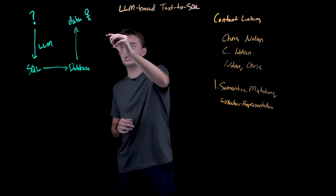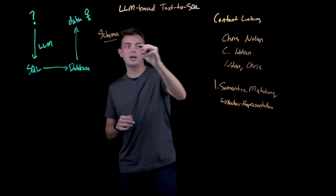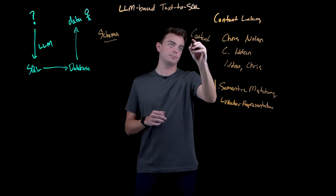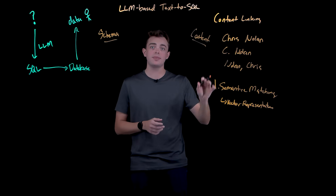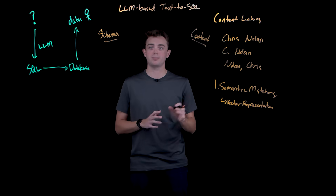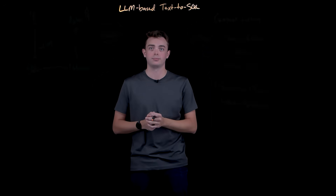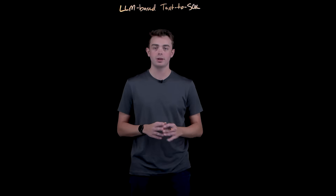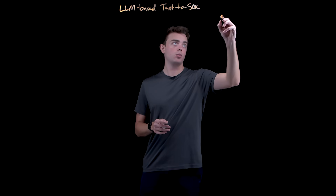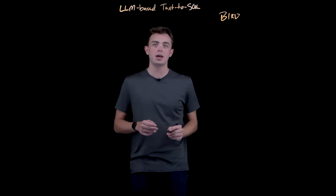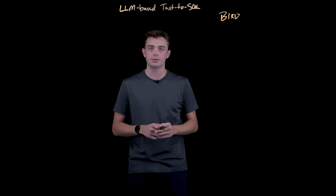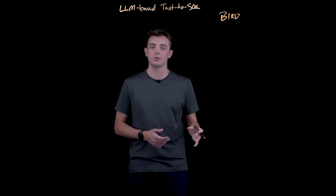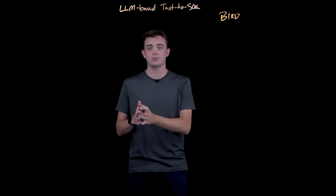So between schema understanding and content linking, modern AI systems can handle both the structure and the messiness of real databases — representing major breakthroughs that make text-to-SQL practical. Now, this technology is impressive, but we need to be realistic about where we are. There are performance benchmarks — one of the most popular is called BIRD — that test LLM-based SQL systems against messy real-world databases instead of cleaned-up academic datasets typically used in research.